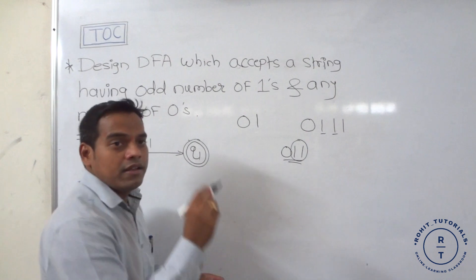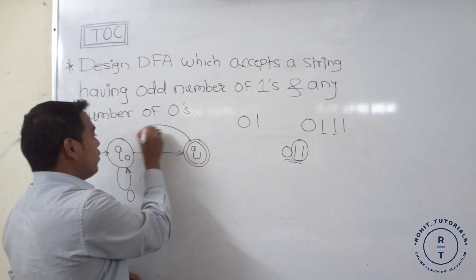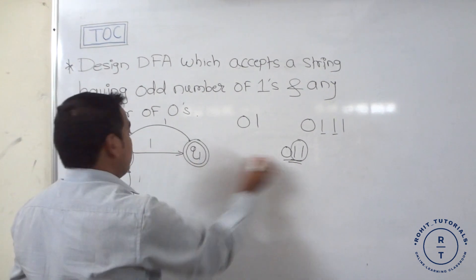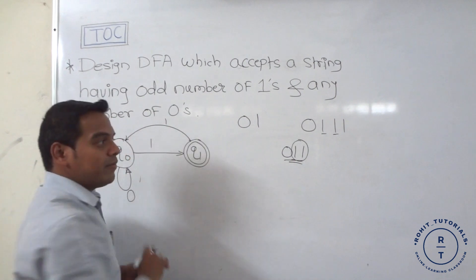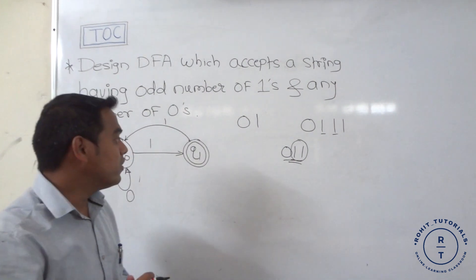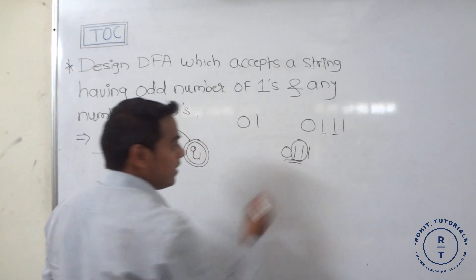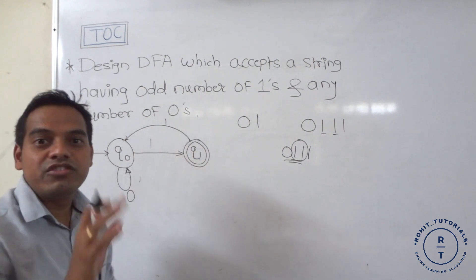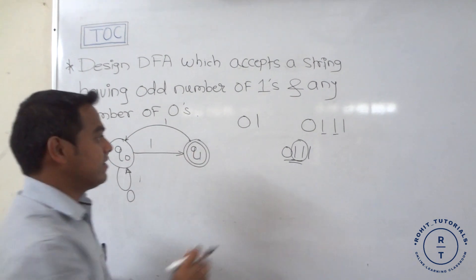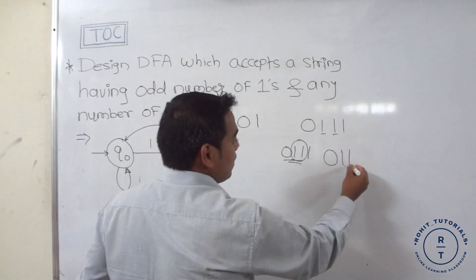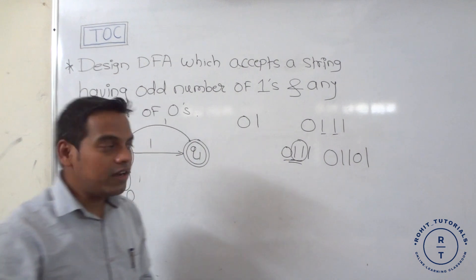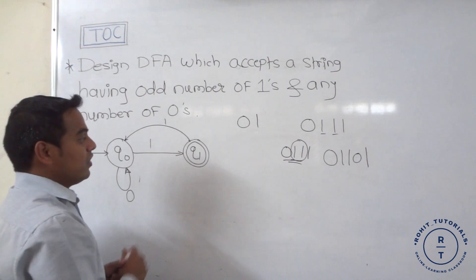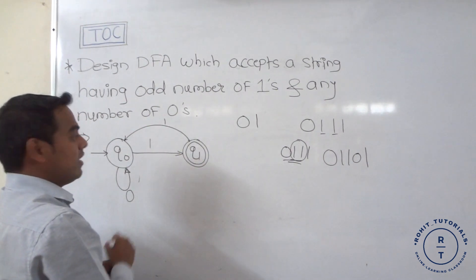Instead, at q1 state, when '1' appears, we transition back to q0. So for the string '0101', which has an odd number of ones: '0' stays at q0, '1' goes to q1, '0' stays at q1, '1' goes to q0 — wait, let's re-examine. On input '01', q0 on '0' stays at q0, then '1' goes to q1 final state — accepted correctly.